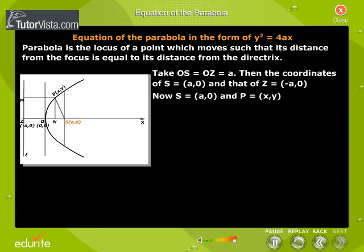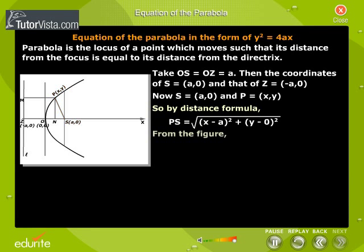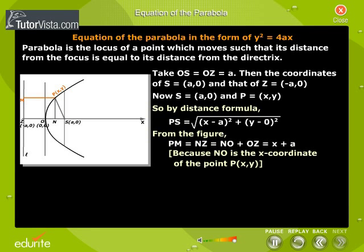Now S is (a, 0) and P is (x, y). So by distance formula, PS = √[(x - a)² + (y - 0)²]. From the figure, PM = NZ = NO + OZ = x + a, because NO is the x-coordinate of the point P(x, y).